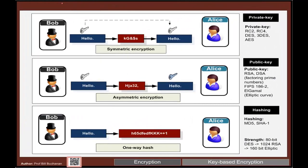The main methods we have are: private key, which is called symmetric encryption, where the same key is used to encrypt and decrypt. We can have asymmetric encryption where we have different special keys — a public and a private key — and we can encrypt with one and decrypt with the other. Then we can also have hash functions, which are one-way functions.